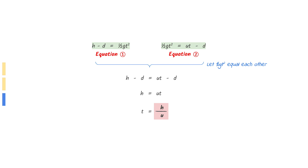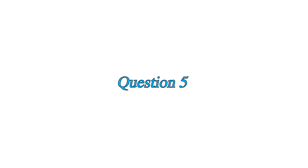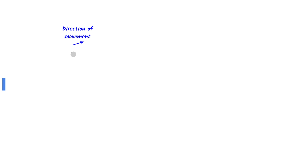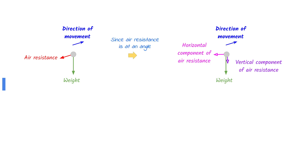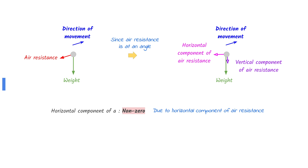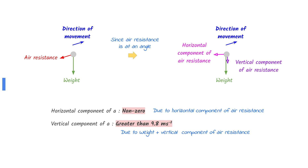Simplify to find the time. The projectile in this question moves at an angle. Frictional forces, in this case air resistance, always act in the opposite direction of movement. Since the resistive force is also at an angle, it can be split into horizontal and vertical components. This means the horizontal component of the acceleration of the projectile is non-zero due to the horizontal component of air resistance. The vertical component of the acceleration is greater than 9.8 meters per second squared due to the vertical component of air resistance adding to the vertical force.